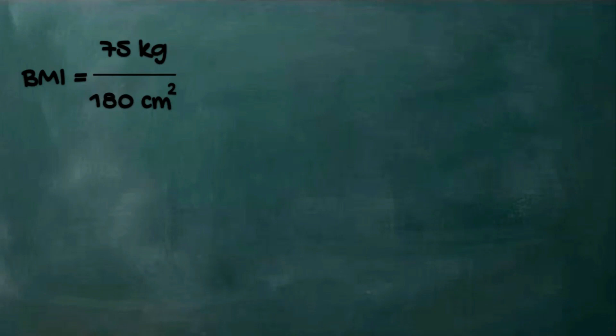To convert centimeter into meter, you just have to move the decimal point twice going to the left. So if you convert 180 centimeter into meter, you will have the conversion 1.8 meters.